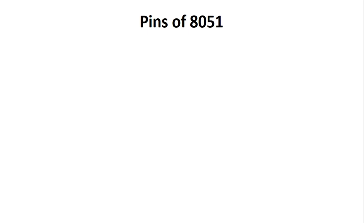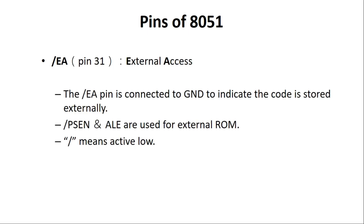Next we'll look at some other important pins of 8051. The EA bar (External Access) pin is an active low pin used to give access to external ROM memory. When this pin is low, the program counter fetches instructions from external memory or external ROM interfaced to 8051. When accessing the program from internal ROM, the EA bar pin should be connected to VCC.